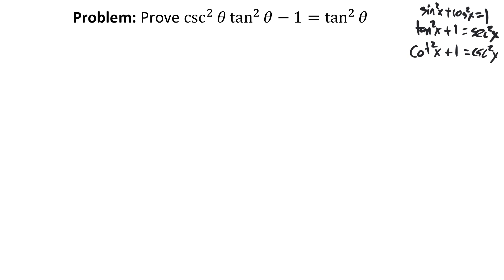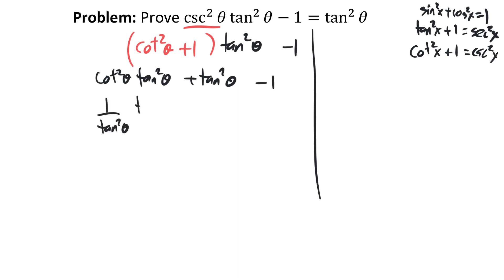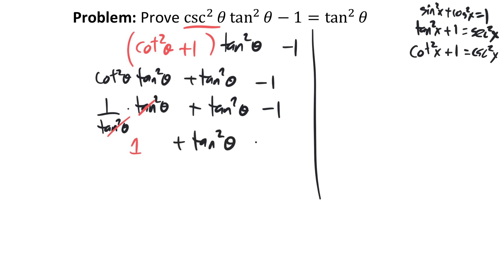I'm going to use that third one. So cosecant squared theta — which is cotan squared theta plus 1 — times (tan squared theta minus 1). Multiplying out: cotan squared theta times tan squared theta, plus tan squared theta, minus 1. Now cotan is the reciprocal of tan, so cotan squared times tan squared is 1 over tan squared times tan squared, which cancels to 1. Then we have plus 1 and minus 1 — those cancel too — and we're just left with tan squared. The left-hand side equals the right-hand side.